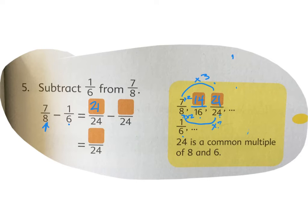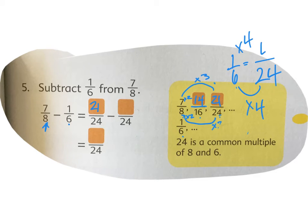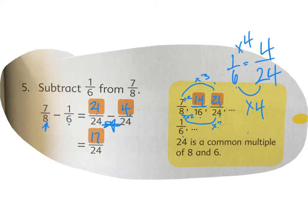One sixth equals how many twenty-fourths? I multiplied by four, so one times four is four — four twenty-fourths. Now subtract: twenty-one twenty-fourths minus four twenty-fourths equals seventeen twenty-fourths. Can you reduce seventeen twenty-fourths? No — seventeen is a prime number, so there's no number that goes into both seventeen and twenty-four.